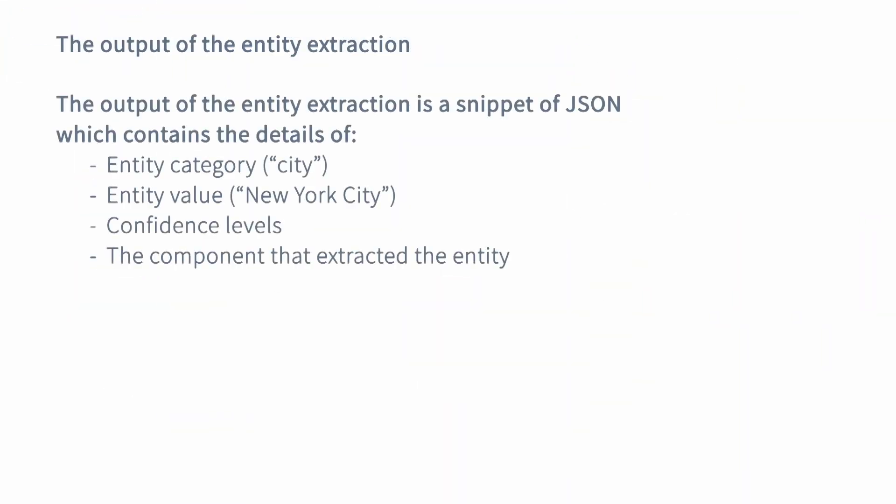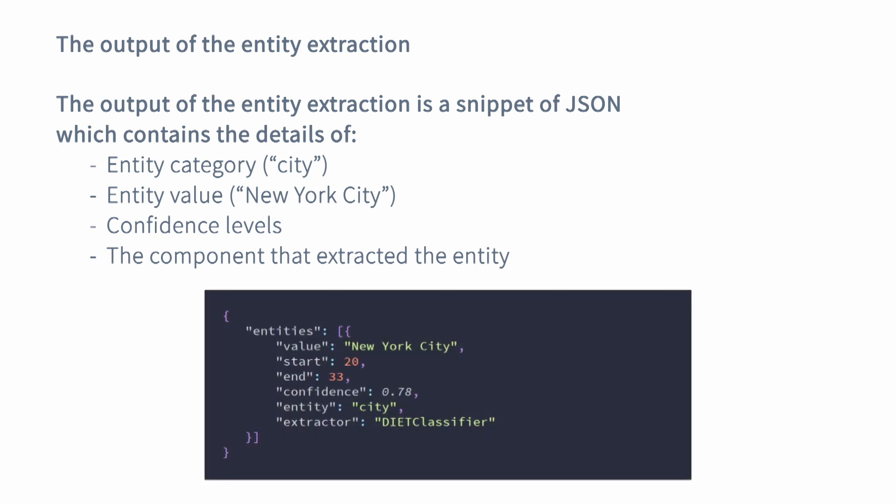When entities are extracted, under the hood Rasa produces an output in a JSON format. That output is rich in detail about what kind of entity has been extracted, what is the value of that entity, where in a sentence that detail was found, and also what method or model has been used for extracting this detail. So for example, here you can see an entity city being extracted with a value New York City, and the method that has been used for extracting this entity is the DIET classifier.